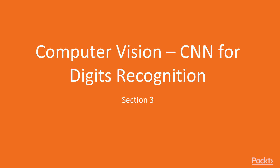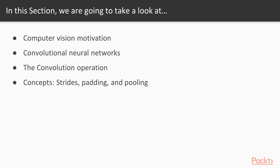With this video we are starting a brand new section: Computer Vision — CNN for digits recognition. This section is all about having computers make sense of visual data in the form of pixels. We'll start by looking at some motivational examples from the industry, then we will talk about the convolutional neural network, which is a special architecture to handle pixel data which has spatial importance. Then we will study the convolution operation and see the math behind it.